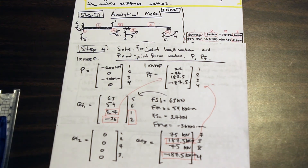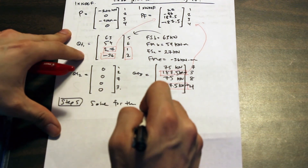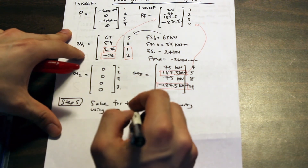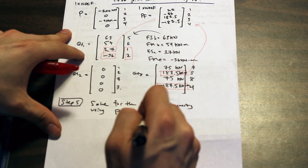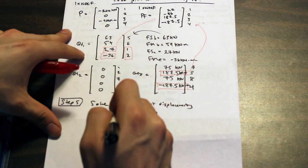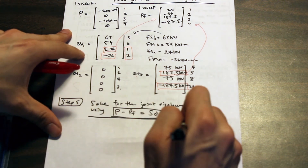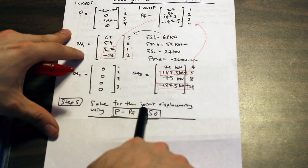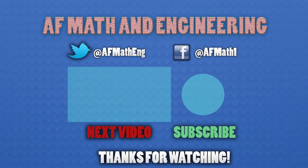The next step is to solve for displacements using the formula P minus PF equals S times D. That's our main equation. We'll split this into a series of videos — the next one will solve for the displacement vector D and finish up the question. Thanks for watching.